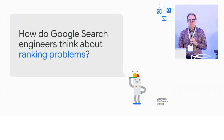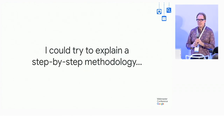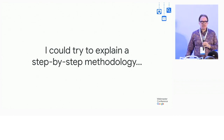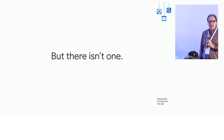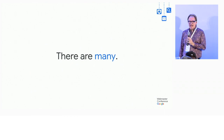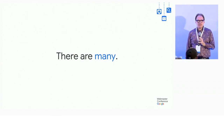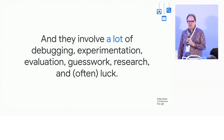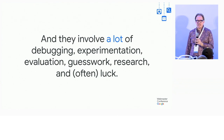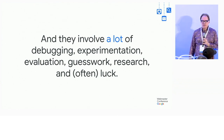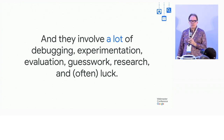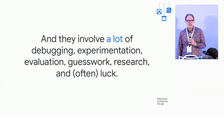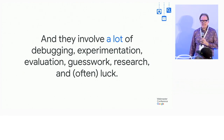How do we think about ranking problems? I could try to put together a step-by-step methodology, but it would be a lie because there isn't one. We have lots of different ways we approach problems — there's a lot of debugging, experimentation, guesswork about what might work, evaluation to see if it does, research into academics and industry publications, and then a lot of luck, stumbling upon something that works.